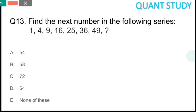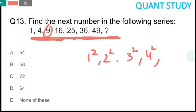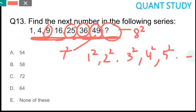Question 13 is based on number series: find the next number in the series 1, 4, 9, 16, 25, 36, 49. This is a series of perfect squares — 1², 2², 3², 4², 5², 6², 7². The next number is 8 squared, which equals 64. The answer is option D, 64.